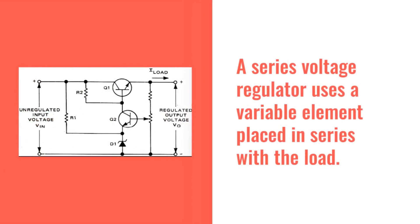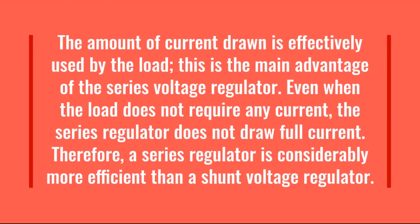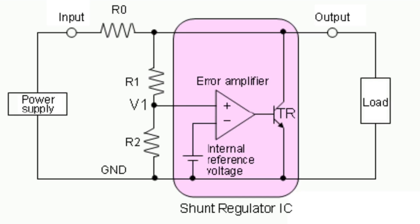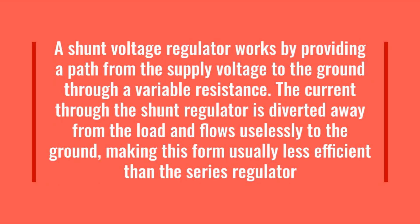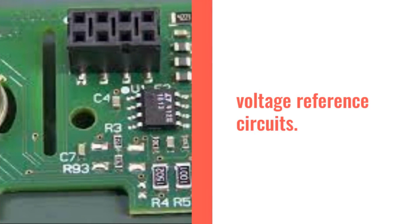A series voltage regulator uses a variable element placed in series with the load. By changing the resistance of that series element, the voltage dropped across it can be changed, keeping the voltage across the load constant. The amount of current drawn is effectively used by the load, which is the main advantage of the series voltage regulator. Even when the load does not require any current, the series regulator does not draw full current. Therefore, a series regulator is considerably more efficient than a shunt voltage regulator. A shunt voltage regulator works by providing a path from the supply voltage to ground through a variable resistance. The current through the shunt regulator is diverted away from the load and flows uselessly to ground, making this form usually less efficient than the series regulator.